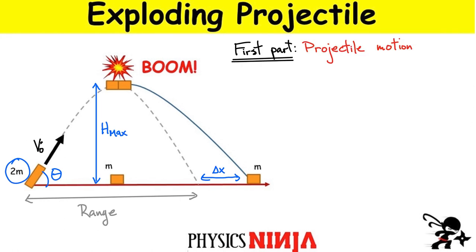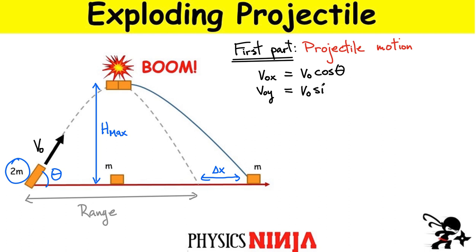Let's do the first part — projectile motion. We have some initial velocity, and for any projectile motion we break down our velocity into two components. If my angle is theta, the x-component of that initial velocity is v0·cos(θ), and the y-component is v0·sin(θ). The key is that once it gets to the top, the y-component of the velocity is zero, and that's super important.